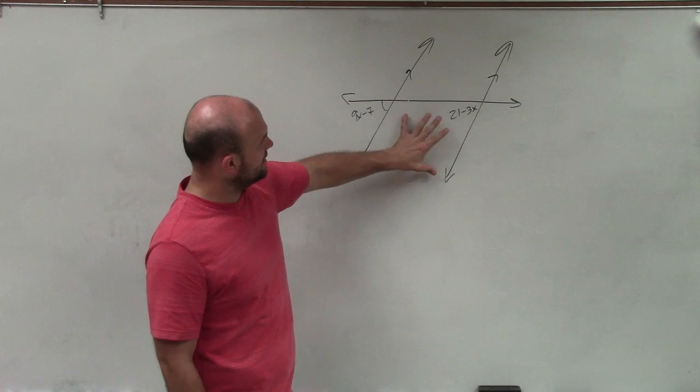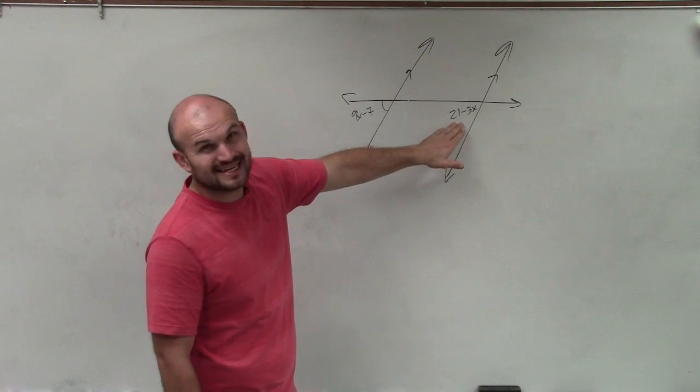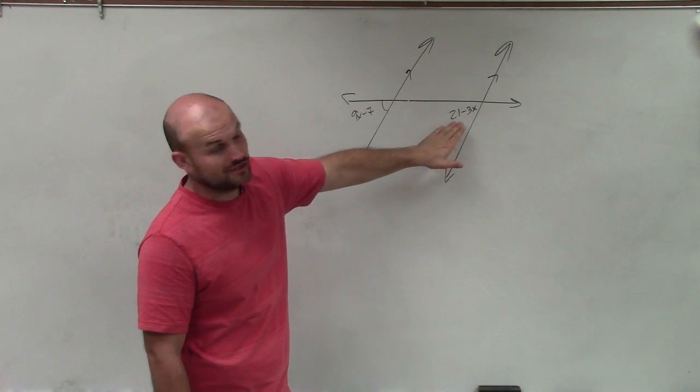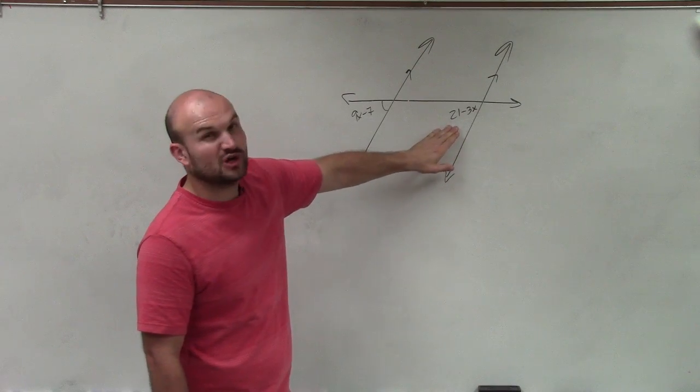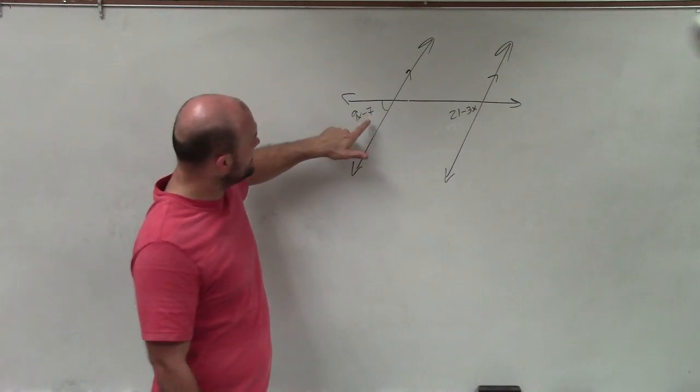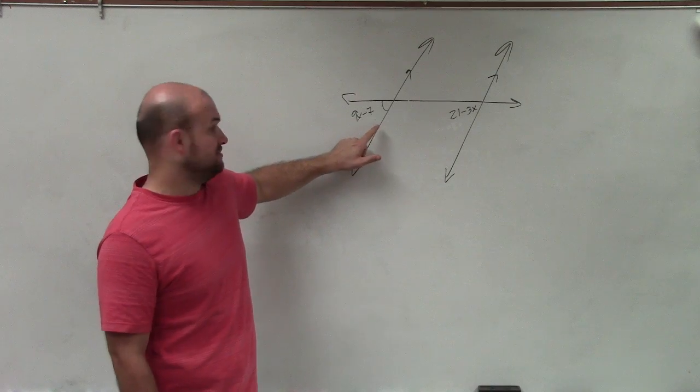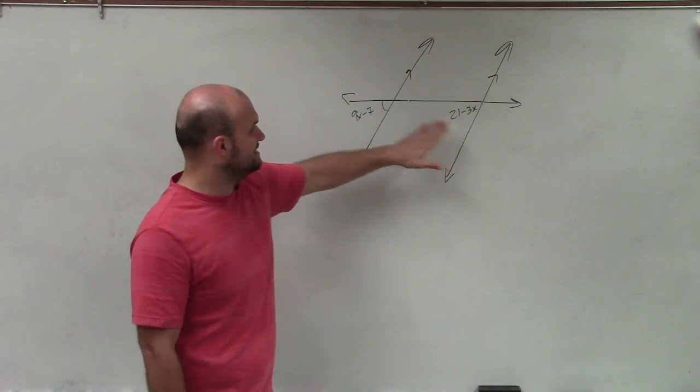Initially I can see here that here's my parallel lines. I can see this angle is inside or between the two interior parallel lines, which we call an interior angle. And this angle is outside of the two parallel lines, which we call an exterior. So therefore I have an interior and an exterior.